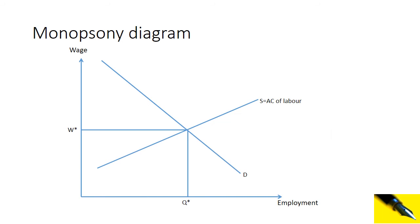To get our monopsony diagram, we have the same assumptions as for perfect competition, except we drop the assumption of many buyers. There is now only one buyer and many sellers of labour — so one buyer, many sellers, perfect information, perfect mobility, and so on.